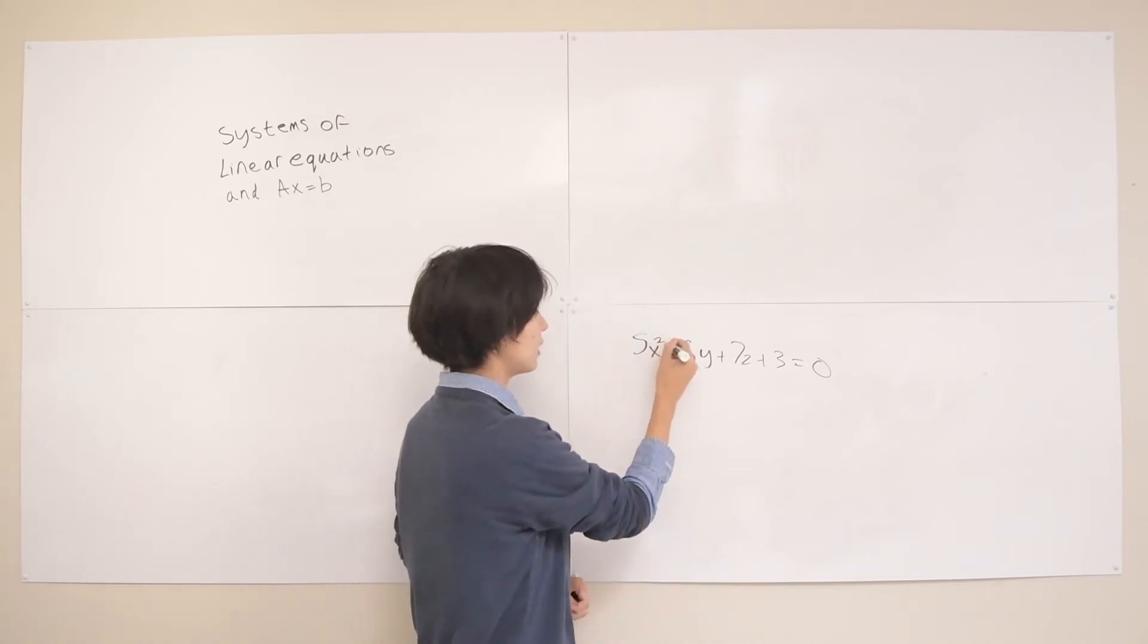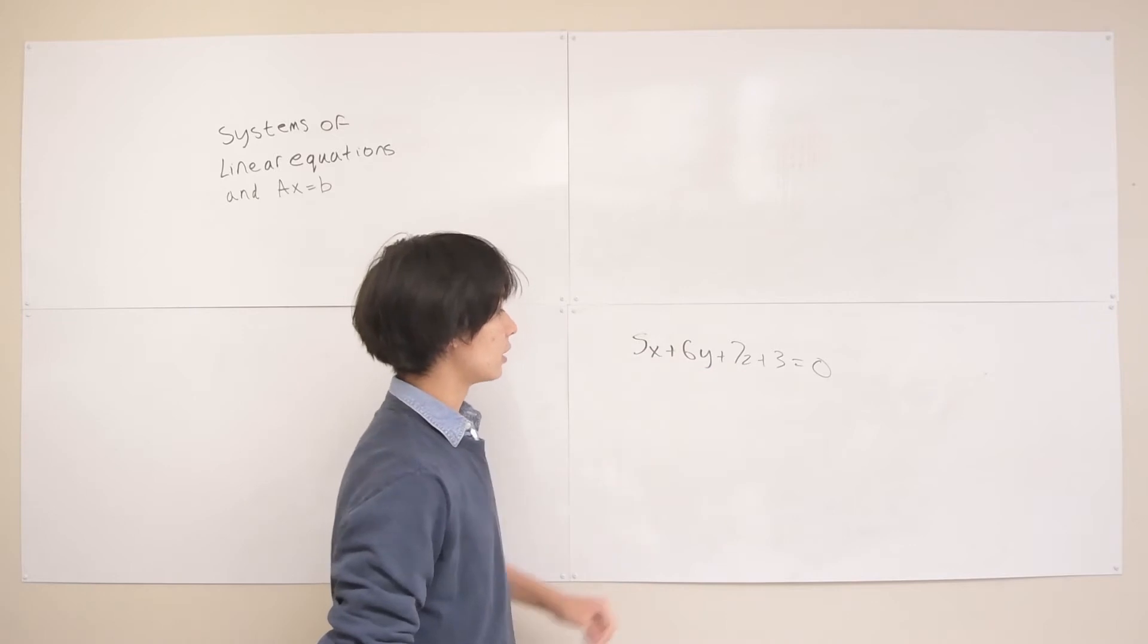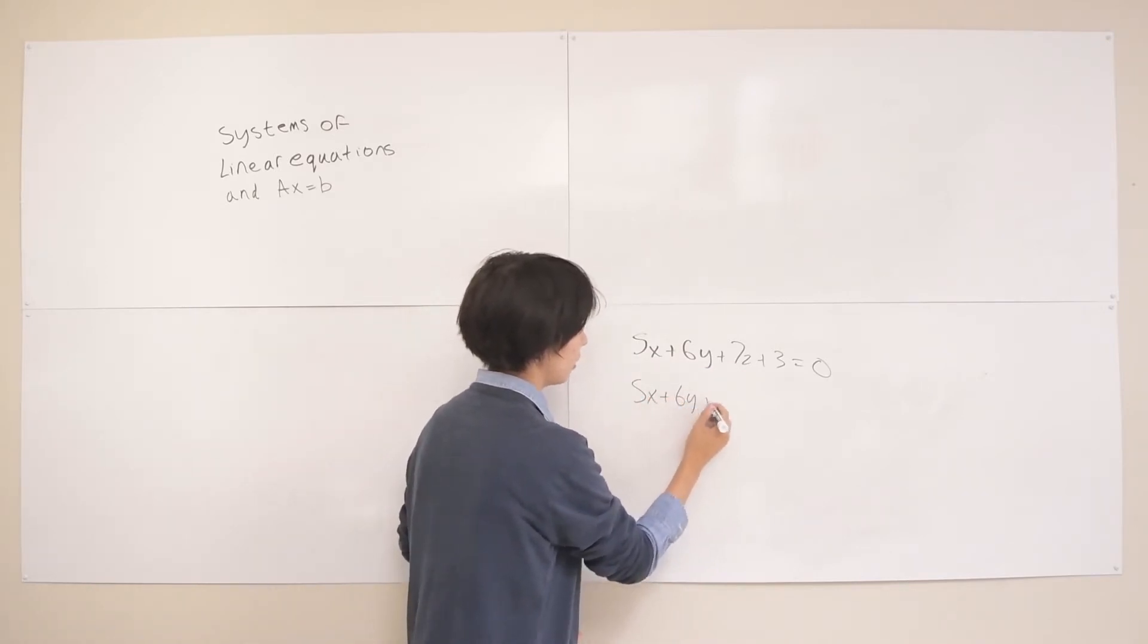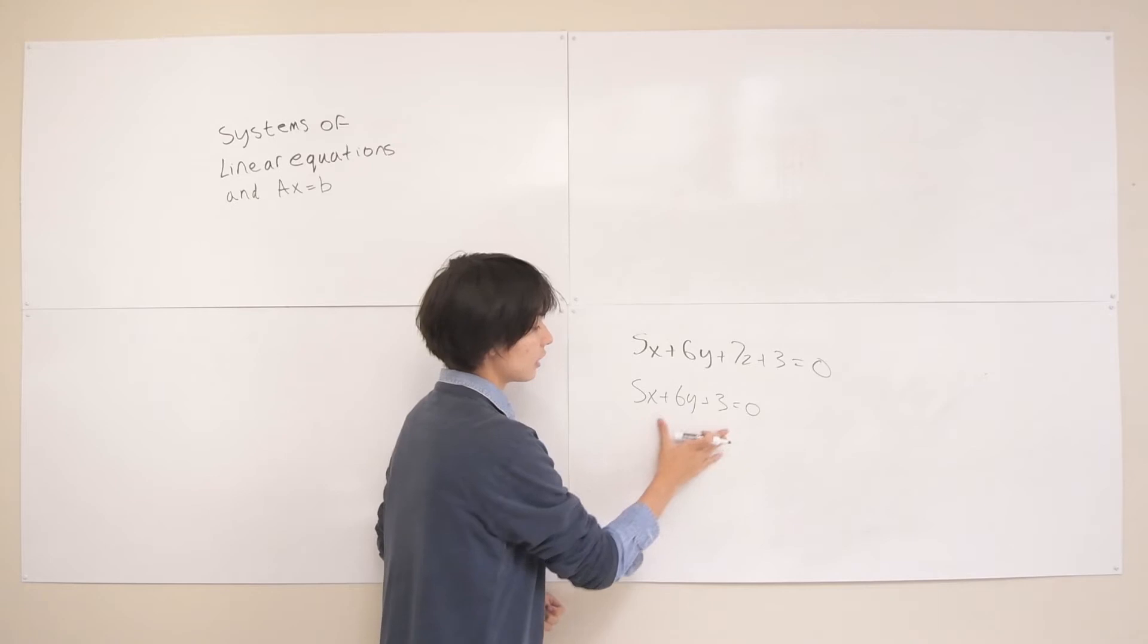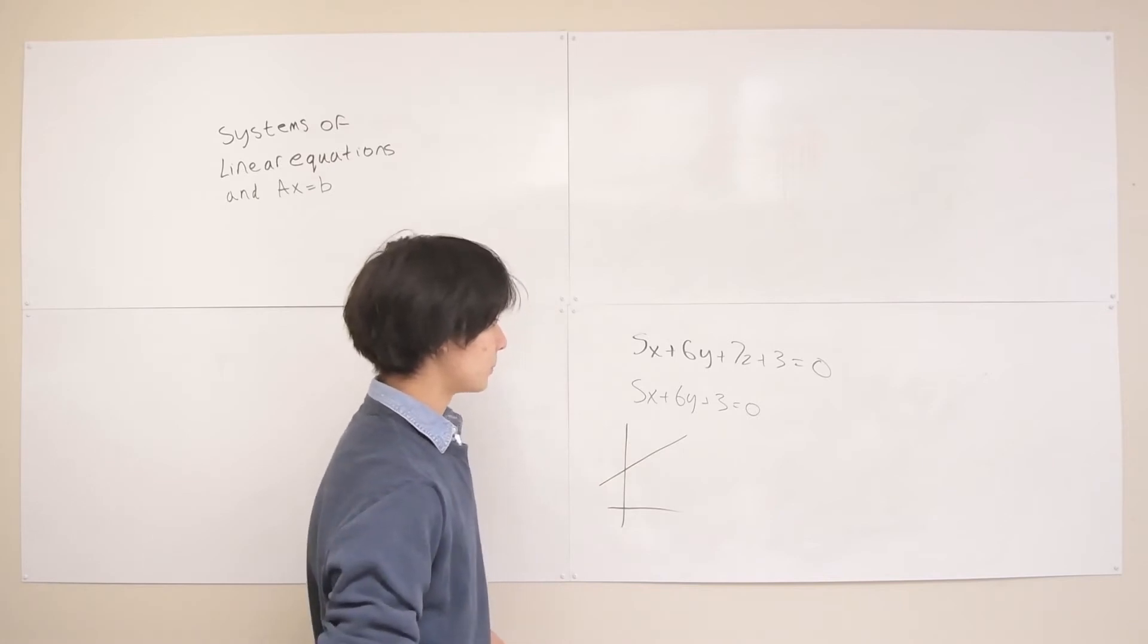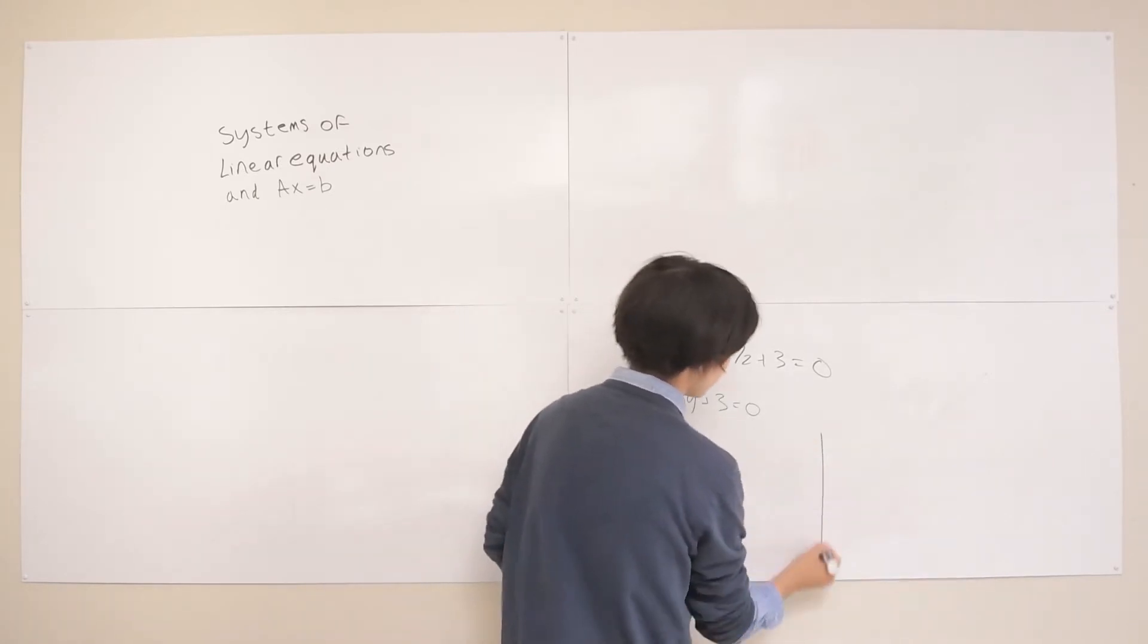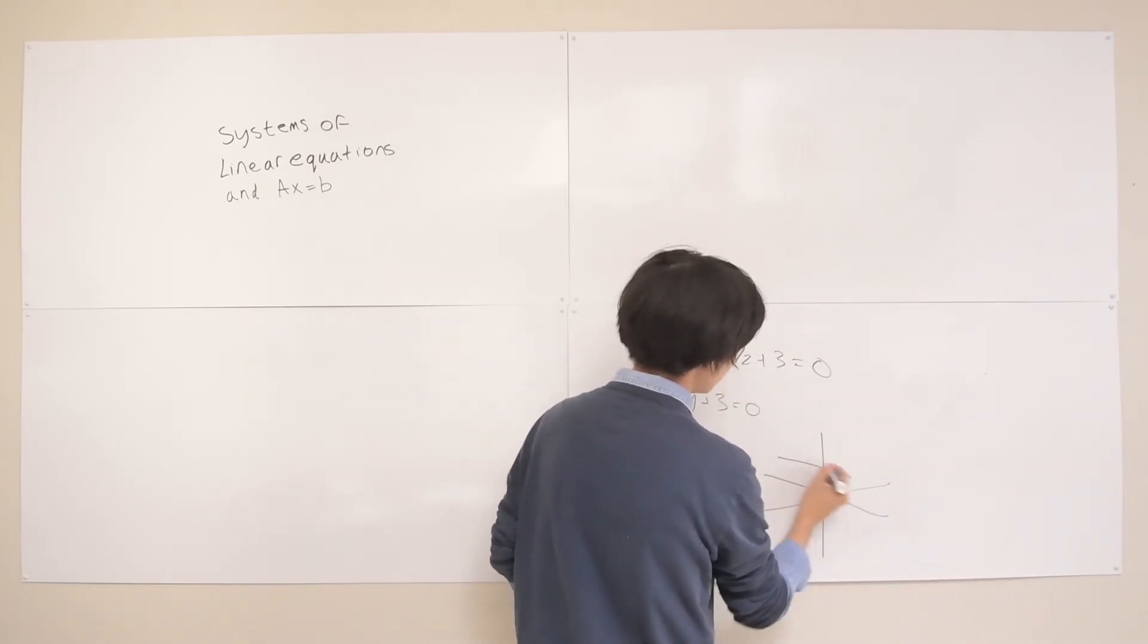You're not going to see anything like that in the linear equation. Let's take one of these variables off and do something simpler like 5x plus 6y plus 3 equals 0. From the grade school days we can recognize that this is the equation for a line in general form. This is a little harder to visualize but this gives the equation for some plane in 3d space.